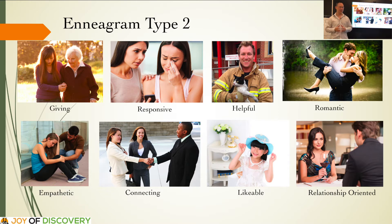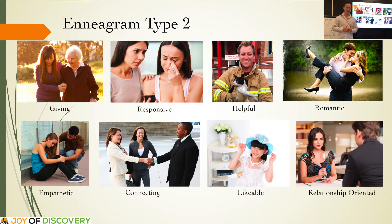Twos are most sensitive to relationships and enjoy being close to someone, whether as a special friend or partner. They know how to build people up, nurture them, and bring out their strengths. Twos spend a considerable amount of time on relationships — whether with family, old friends, or investing time and energy in cultivating new friendships. That's Enneagram Type 2.